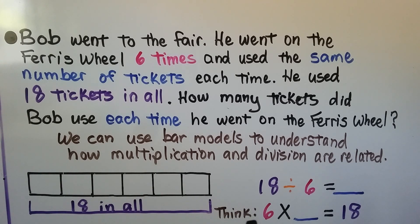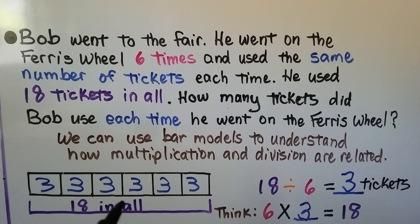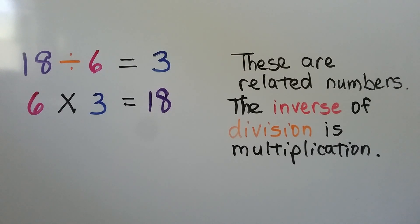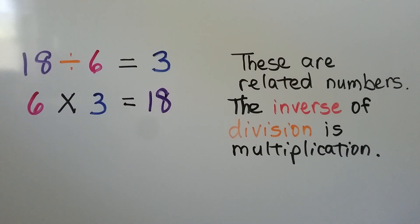We need to find what the quotient is. We can think of a related multiplication fact: six times something is equal to 18. Can you think of a multiplication fact for six that would equal 18? If you said three, you're right. We can put a three in each section of the bar model. We know that every time he went on the Ferris wheel, he needed three tickets. 18 divided by 6 is equal to 3, and 6 times 3 is equal to 18. These are related numbers. The inverse of division is multiplication — we can find the quotient to a division problem by remembering our multiplication facts.